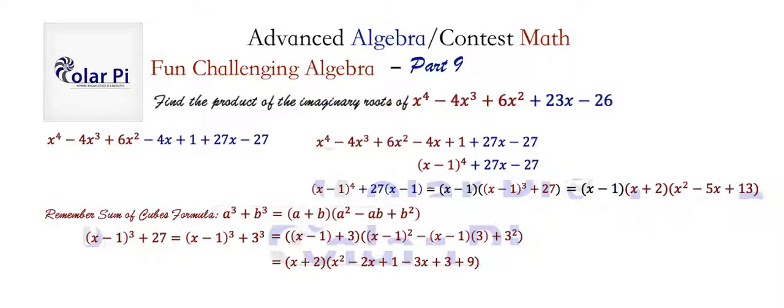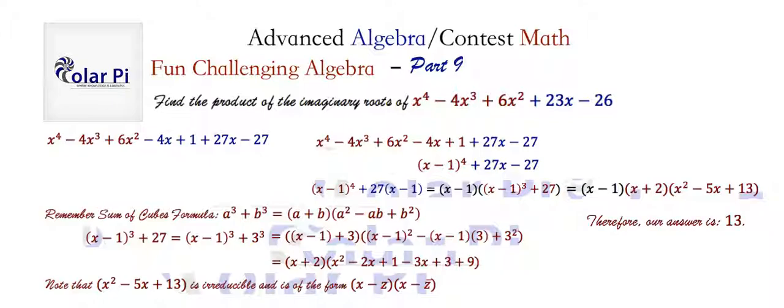And so if we want to write this quadratic in factored form, x² - 5x + 13, we can only write it in factored form using its two imaginary roots, z and its conjugate z̄. And so we could rewrite this quadratic once we find its two imaginary roots as (x - z), where z is one of its complex or imaginary roots, times (x - z̄). But wait, if we multiply this out, we see that the product of the two imaginary roots is going to just be this last term here, namely 13. And therefore, our answer is 13.